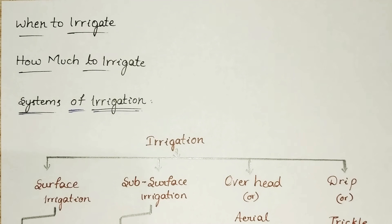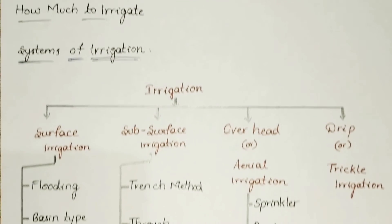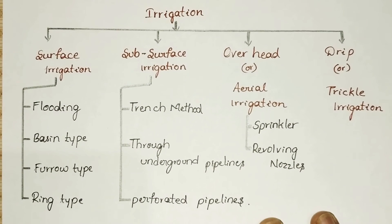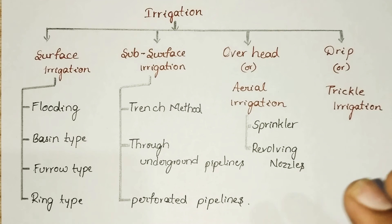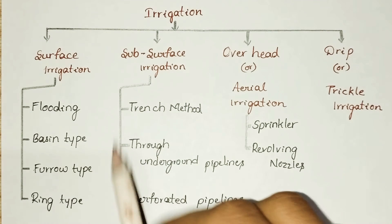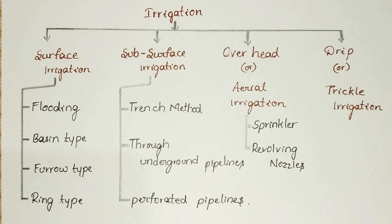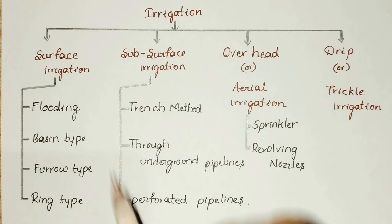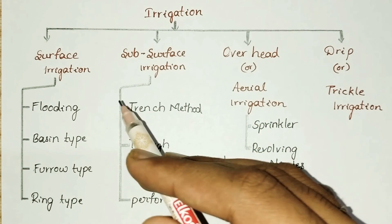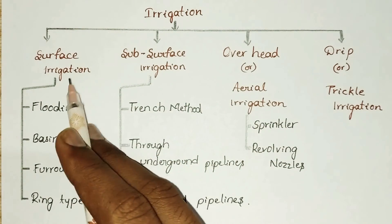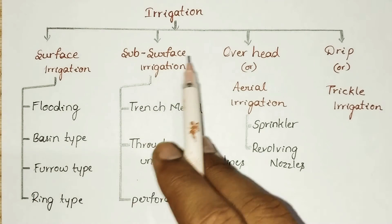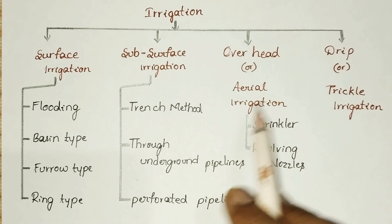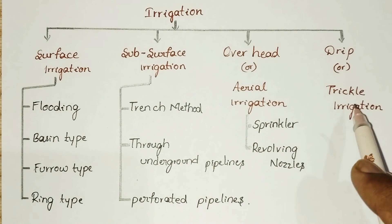Now we are coming to know the system of irrigation. In this tree diagram, we can see the classes and subclasses. The main part is irrigation, which has four types: surface irrigation, subsurface irrigation, overhead or aerial irrigation, and drip or trickle irrigation.